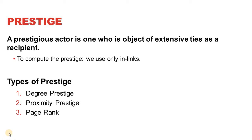Welcome again. In this lecture we are going to discuss the second type of techniques for link analysis, called prestige-based techniques. According to prestige, a node or an actor is considered to be more prestigious if it is the recipient of a high number of edges. This is one of the major differences between centrality and prestige.